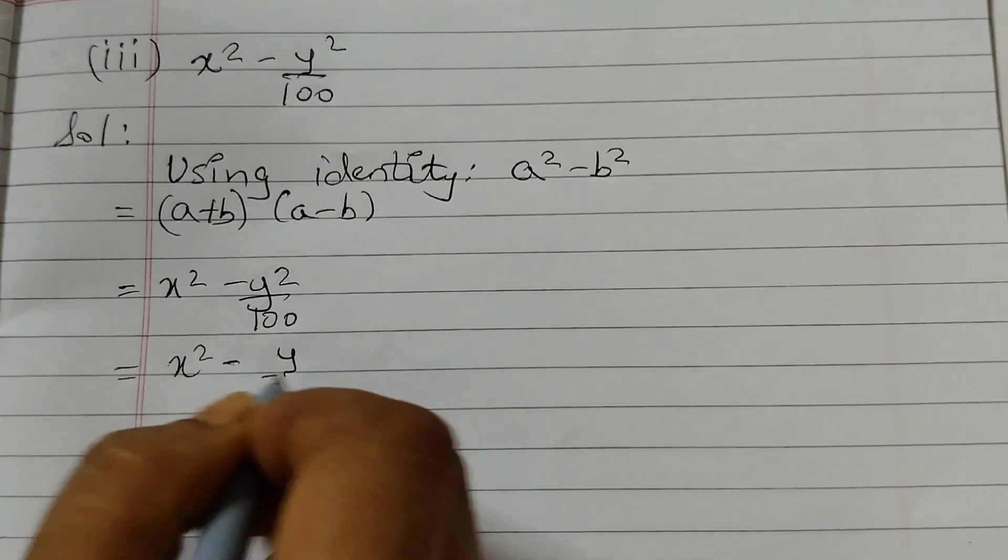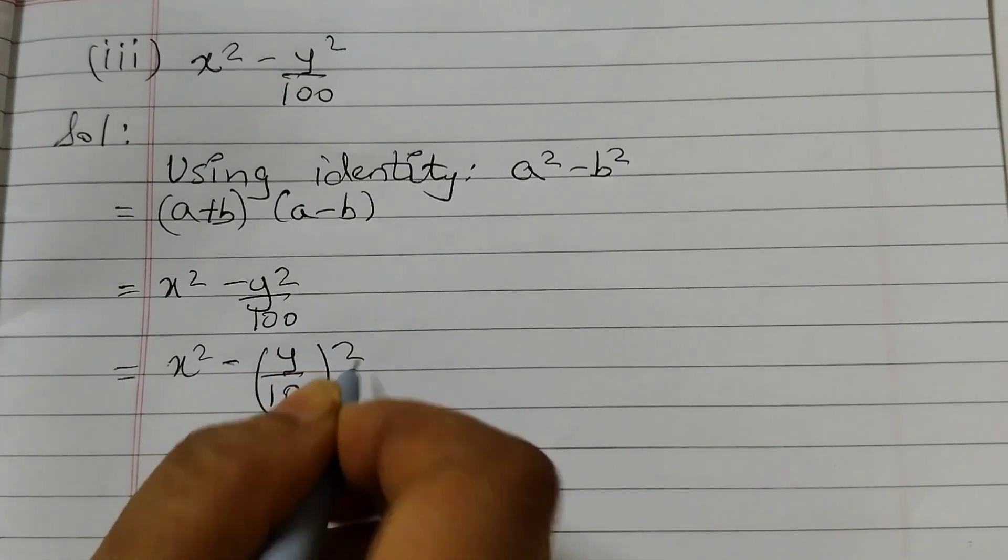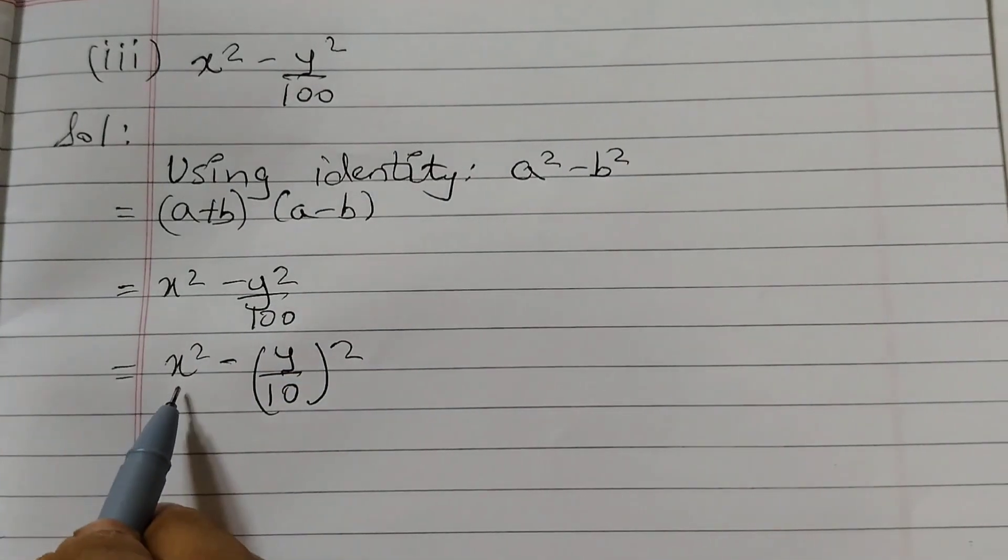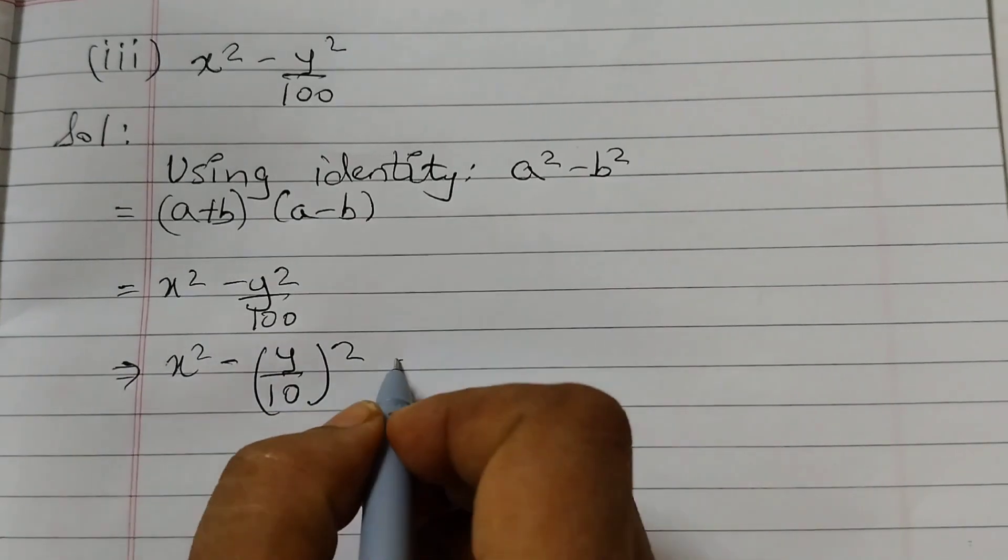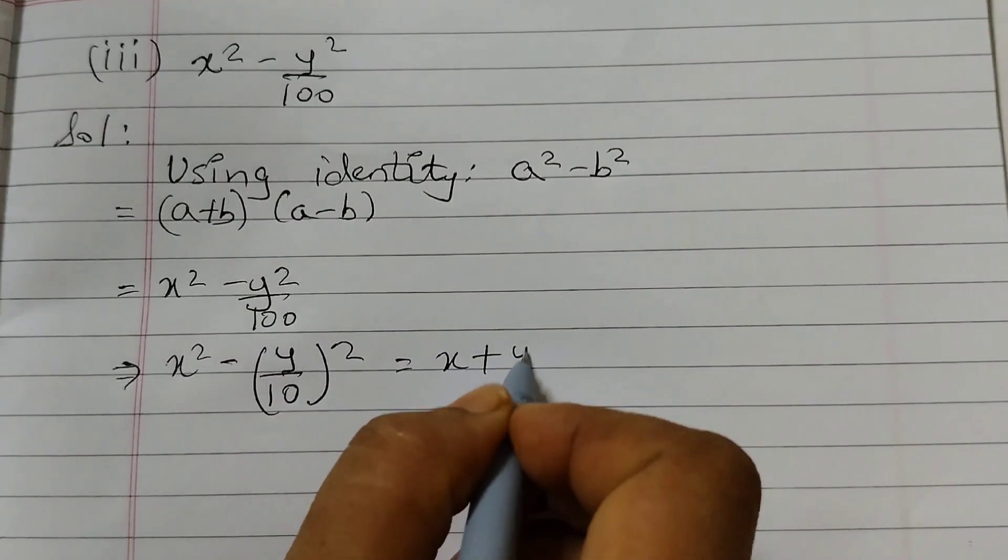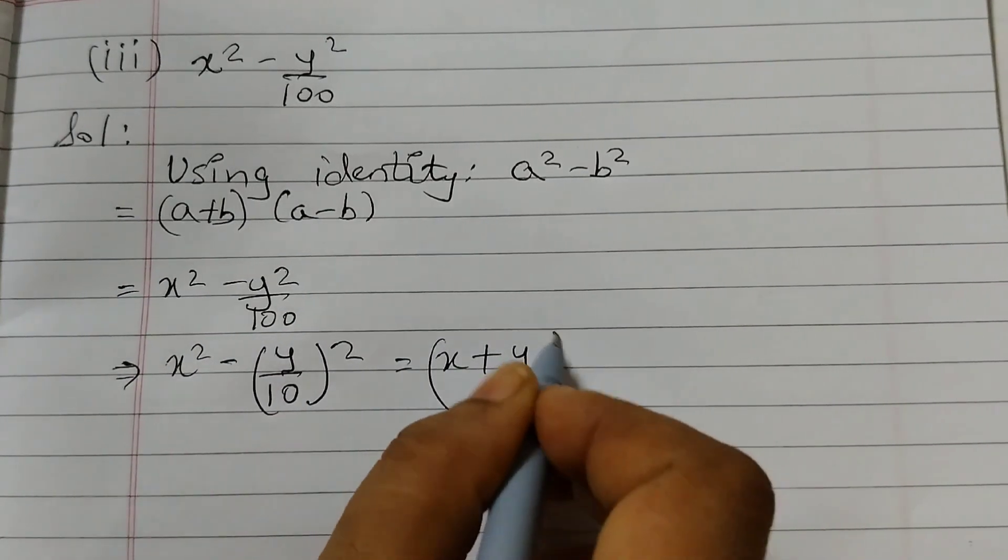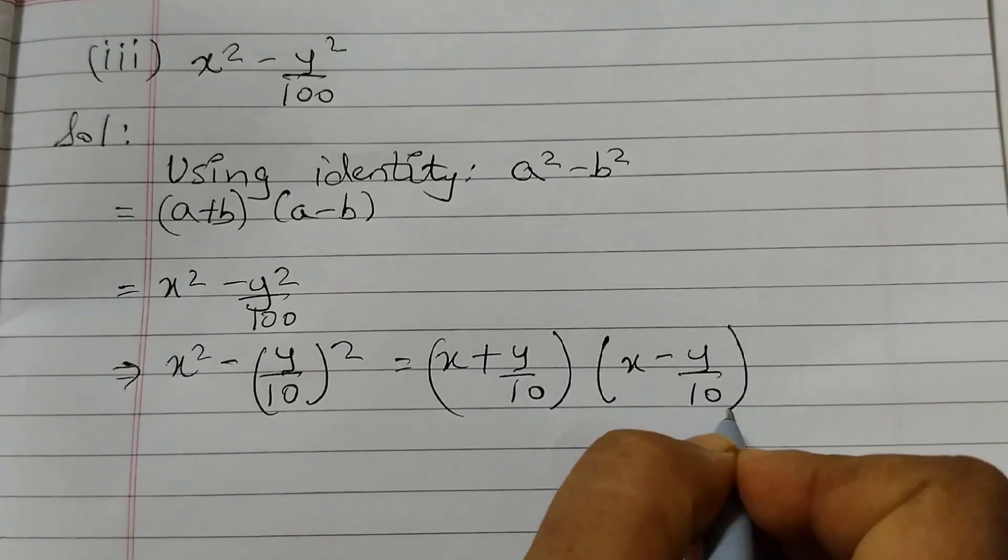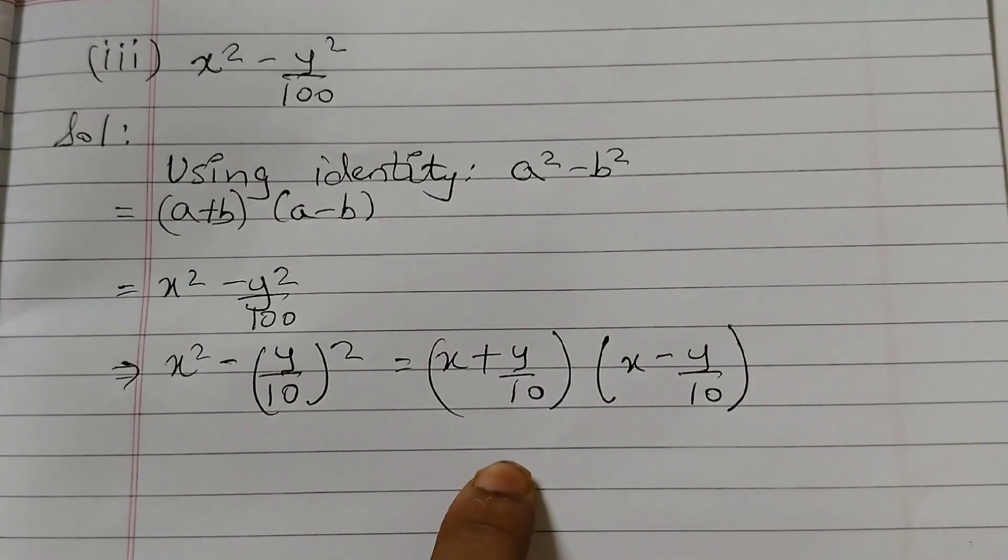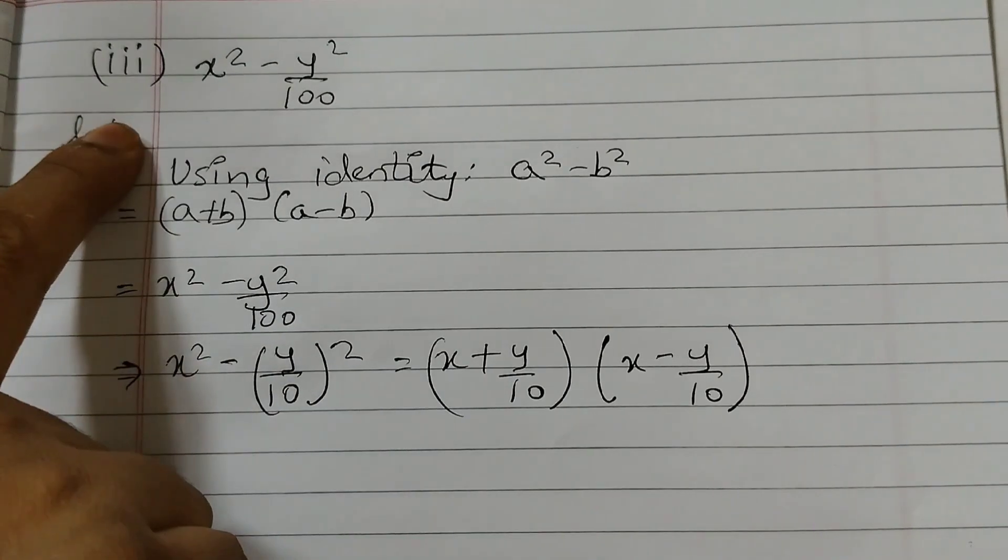So for this first we will write it as x squared minus y by 10 squared. Now this is in this form. So that would be equal to x plus y by 10 and x minus y by 10. These are the factors for this given polynomial.